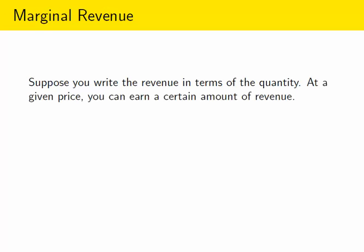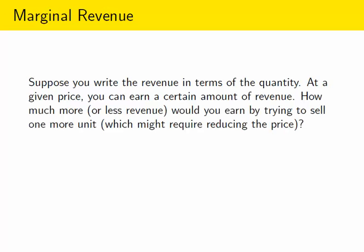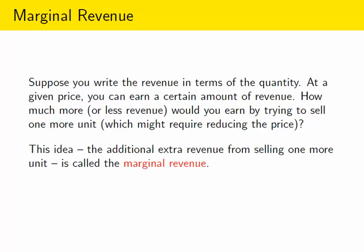Now suppose you've done that. At a given price you can earn a certain amount of revenue. At a given price you're going to sell a certain quantity. How much more or less revenue would you earn if you tried to sell one more unit? Now remember that trying to sell one more unit would likely require you to decrease the price that you're charging. But this is an important question in business and economics. The additional extra revenue you would obtain from selling one more unit, we call that the marginal revenue, usually abbreviated as just MR.